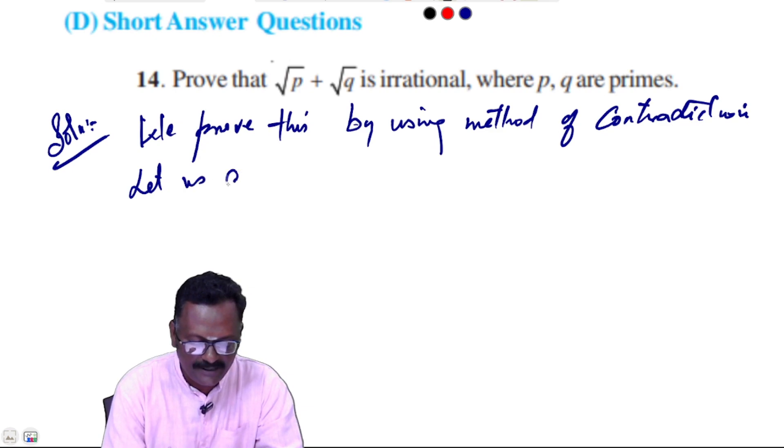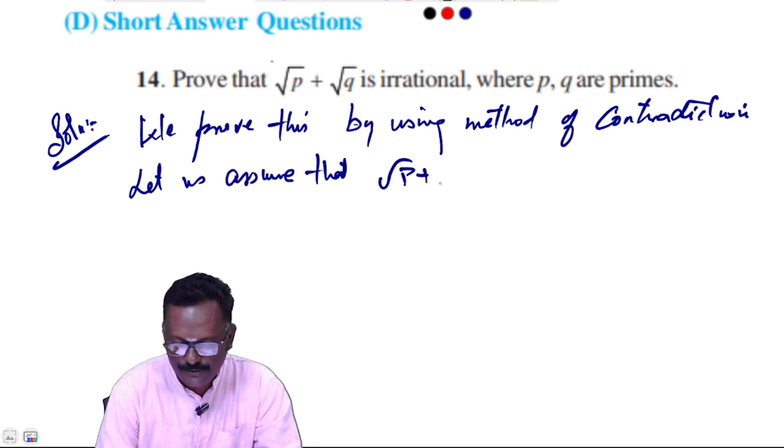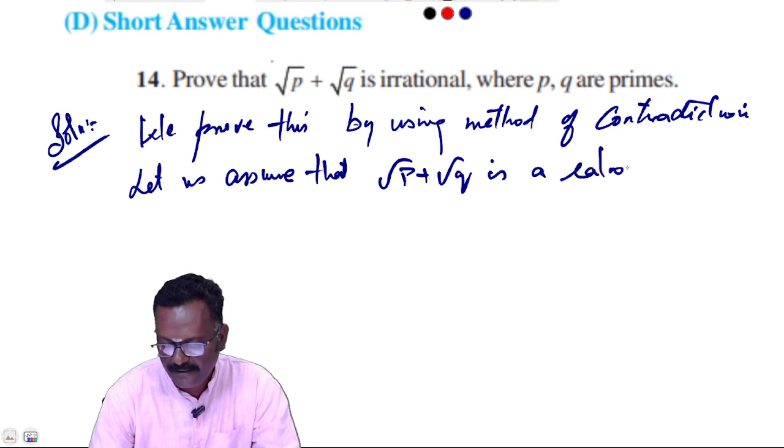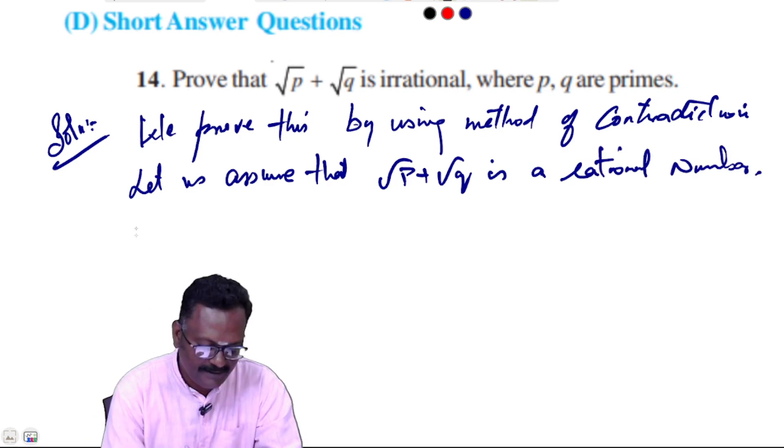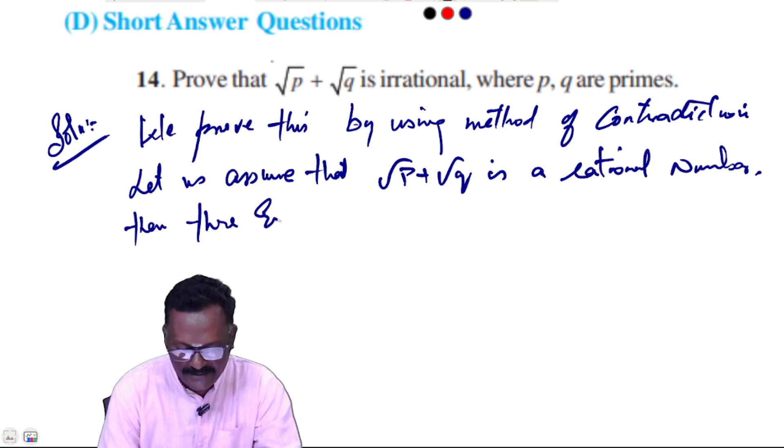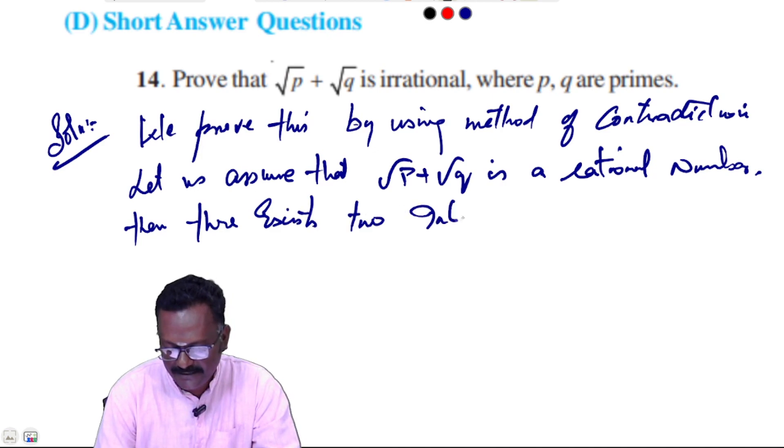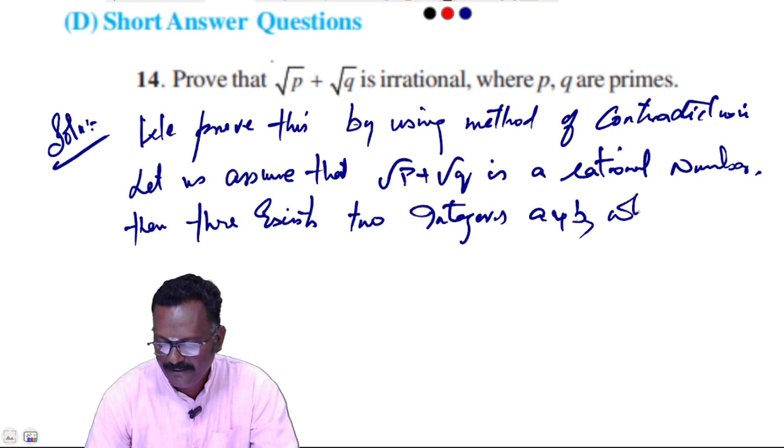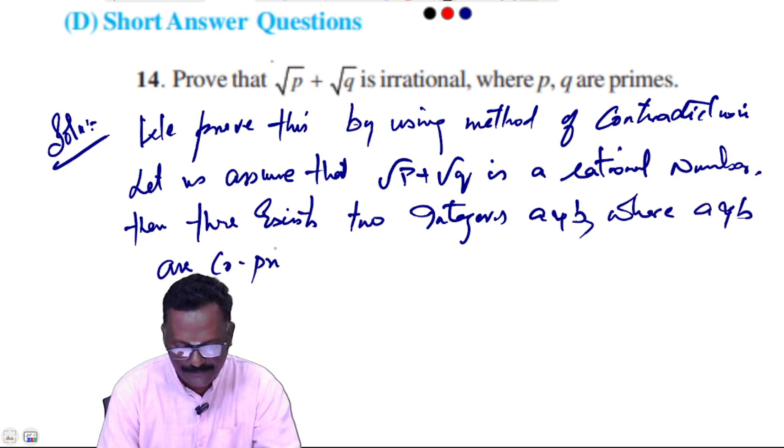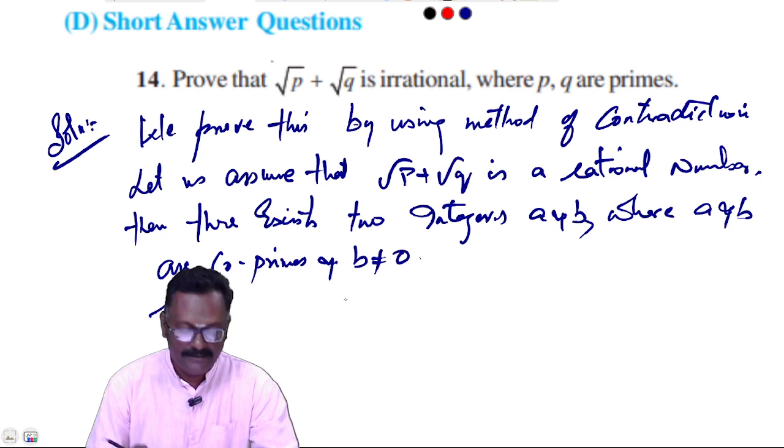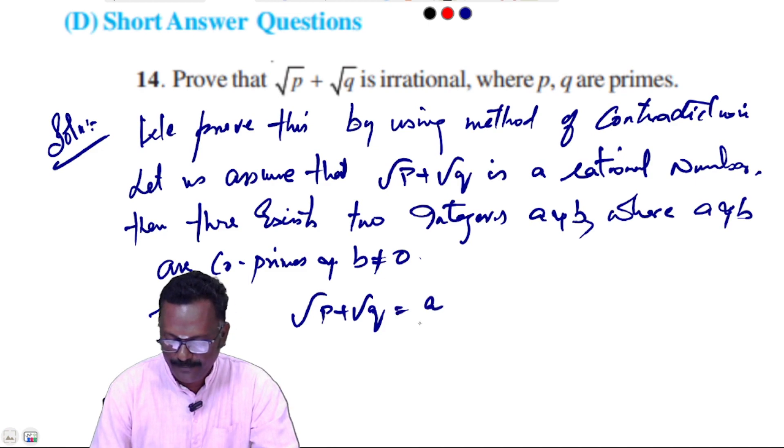Let us assume that √p + √q is a rational number. Then there exists two integers a and b, where a and b are coprime and b not equal to 0. Then √p + √q is equal to a/b.